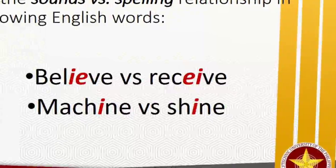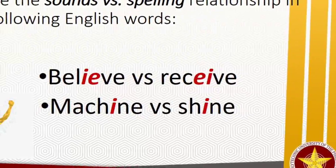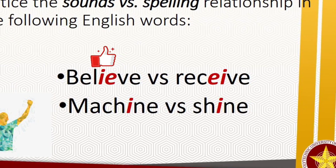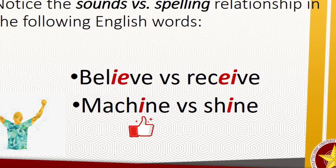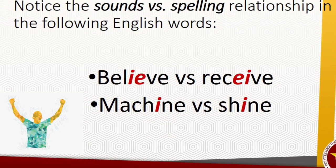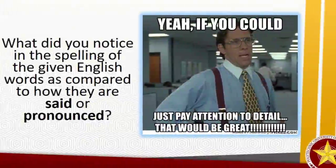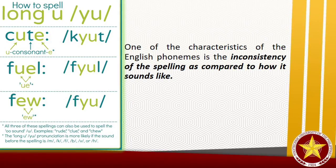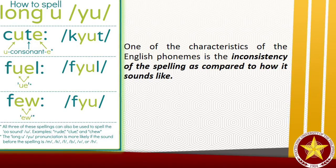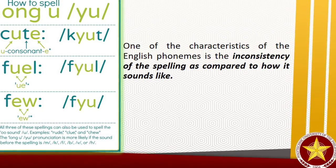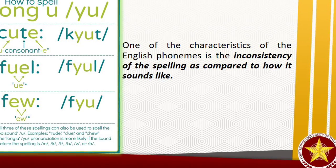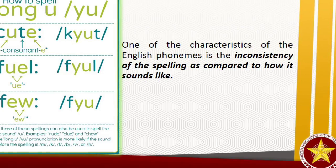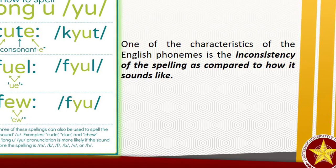Notice the sounds versus spelling relationship in the following English words. What can you say about the order of letters I and E in the words 'believe' and 'receive'? What about the sound of letter I in the word 'machine' as compared to how it sounds in the word 'shine'? One of the characteristics of English phonemes is the inconsistency of the spelling as compared to how it sounds. This means that most of the time, you do not spell English words according to how you say them.